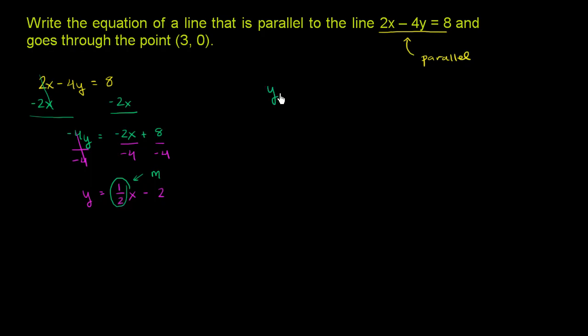It's going to have the form y equals 1 half x plus some y-intercept. It's not exactly this line. b is going to be different than this negative 2 here, but it's going to have the same slope. They're going to intersect the y-axis in a different place, but they're going to be parallel to each other. So now we need to figure out how to figure out b. And to do that, we have this information right over here.